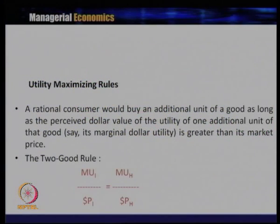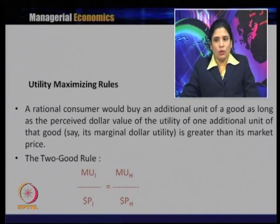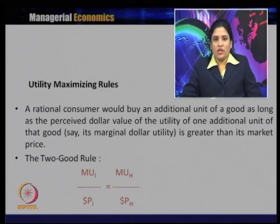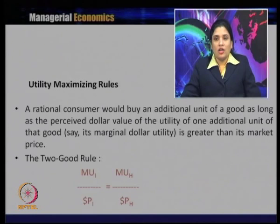The utility-maximizing rule for two goods I (ice cream) and H (hamburger) is: MUi/Pi = MUh/Ph. The rational consumer buys an additional unit of a good when the perceived dollar value of its marginal utility is greater than its market price. When the ratio is equal, the consumer spends on both goods; when there is an inequality, the consumer spends more on the good providing the higher level of marginal utility per dollar.